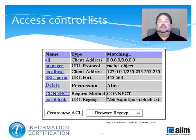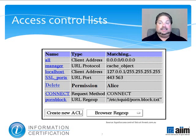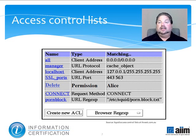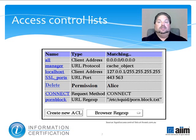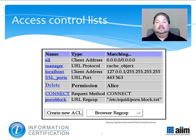An Access Control List, or ACL, is a list of permissions attached to an object in a computer file system that specifies which users or system processes are allowed to access it, as well as what operations are permitted or prohibited. Each entry in a typical ACL specifies a subject and an operation. For instance, if a file has an ACL that contains 'Alice, delete,' this would give Alice permission to delete the file. Note that an ACL is a form of authorization, which is about defining what you can do, and that's a concept that differs from authentication, which is about validating who you are.